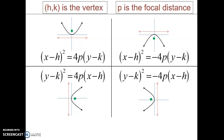Something else about H and K: in the formulas they all have a negative sign in front of them. When they come out of those parentheses and you're trying to find the vertex, they change signs. Although it says negative H in the equations, the vertex is listed as H, K — both positive. So the signs are changing, and we'll see that as we graph some of these. X and Y are just parts of a point on the graph.